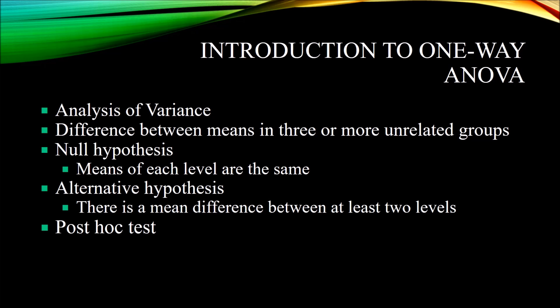The example I'm going to use in this video would be a study where you have 90 participants: 30 participants in a cognitive behavioral therapy counseling treatment, 30 participants in psychodynamic treatment, and 30 participants in a control group. So in this instance there's one independent variable — treatment — and three levels: CBT, psychodynamic, and control. The analysis of variance would be used to determine if there's a difference between the means of those three groups on some dependent variable, let's say a measure of depression.